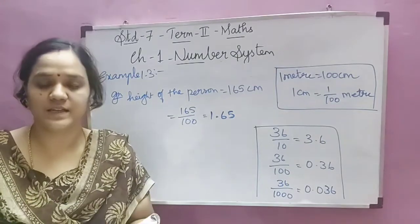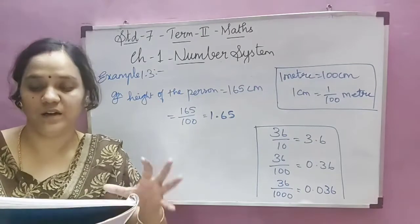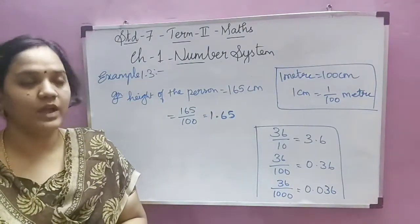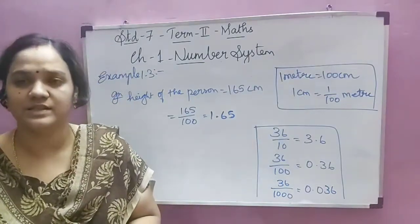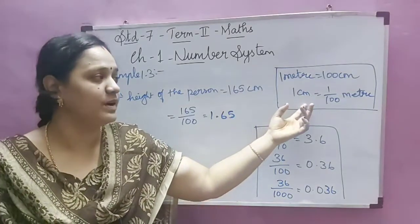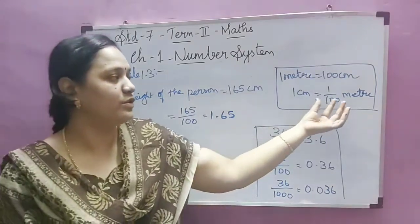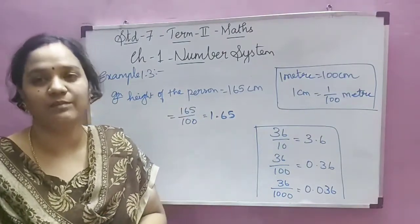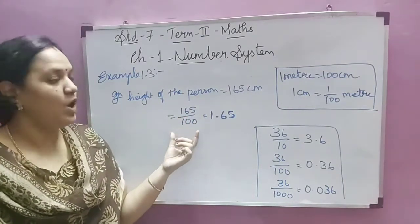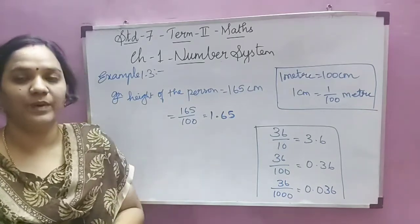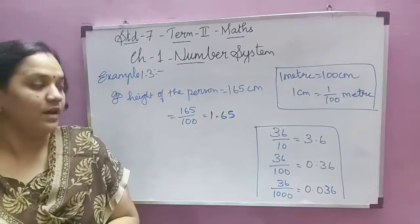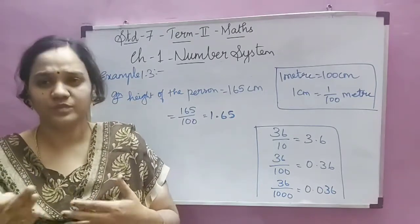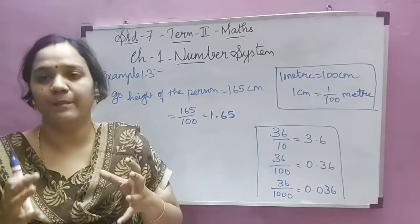Example 1.3: the height of a person is 165 centimeters — express this height in meters. We are going to convert centimeters to meters. We know 1 meter equals 100 centimeters, so 1 centimeter equals 1/100 meters. To convert centimeters to meters we divide by 100. When dividing by powers of 10 such as 10, 100, or 1000, there is a simple trick.